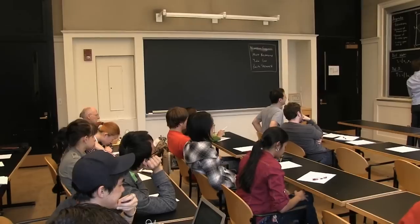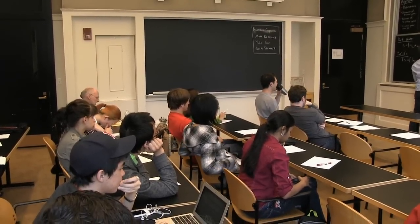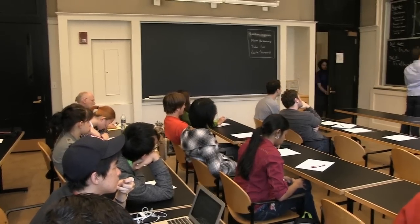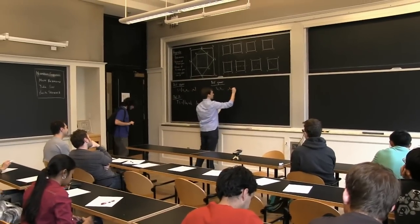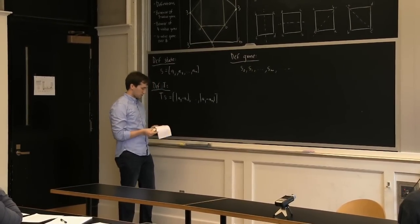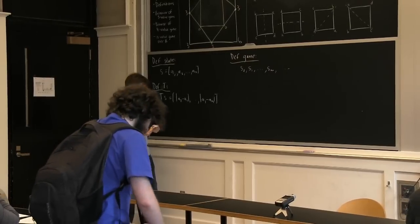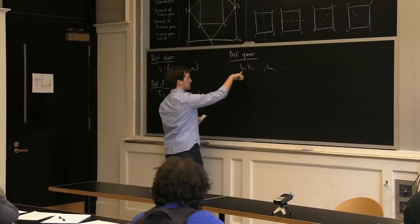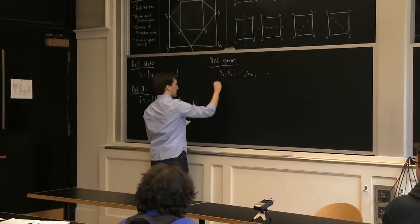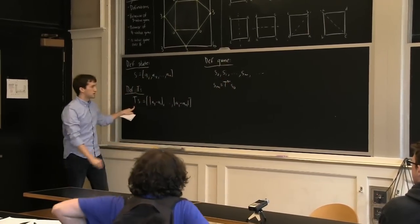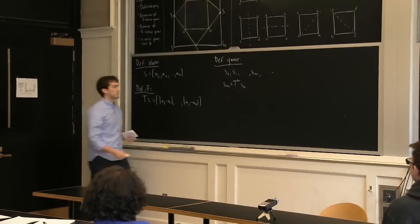The last thing we need to define is a game. The game is just going to be a collection of the states S0, S1, and so on. The relationship between S0, S1, and Sm is simply that Sm corresponds to m applications of our operator T on the initial state.